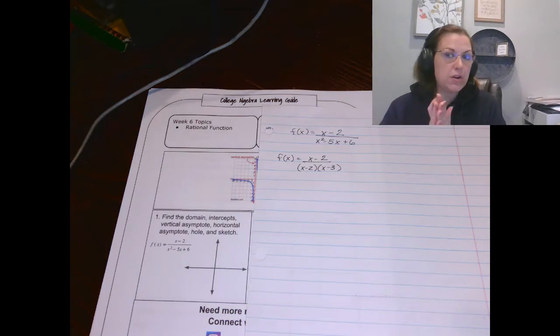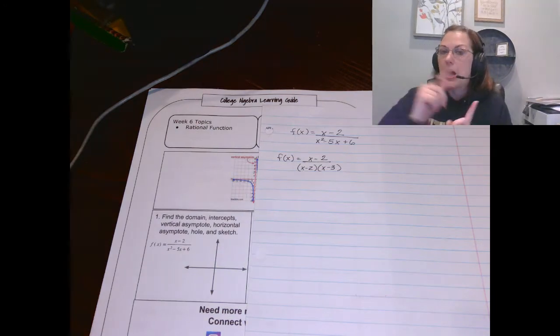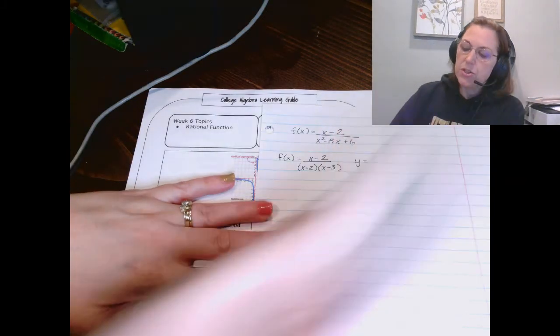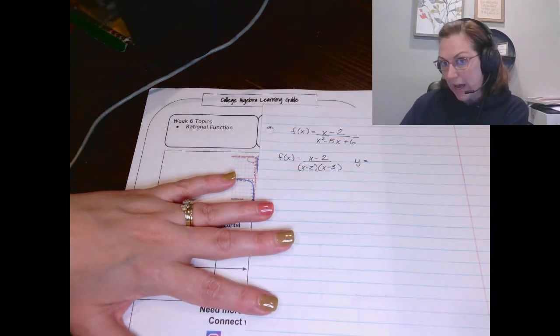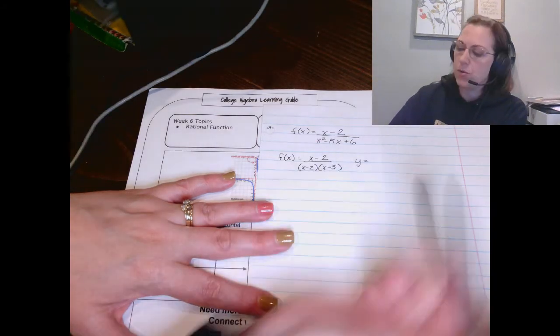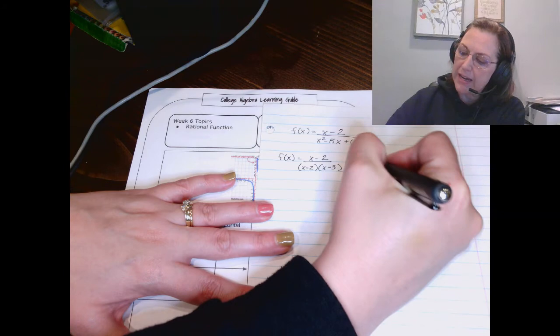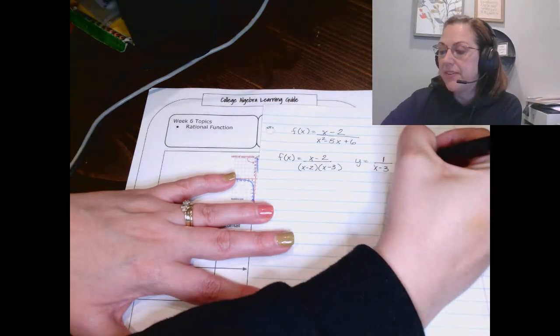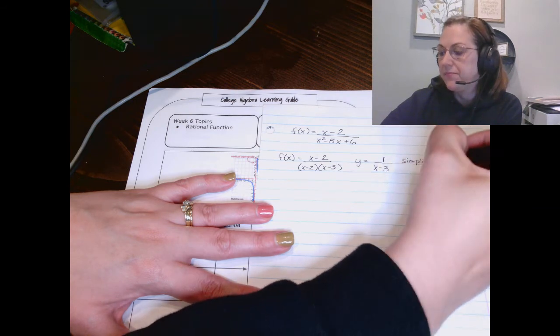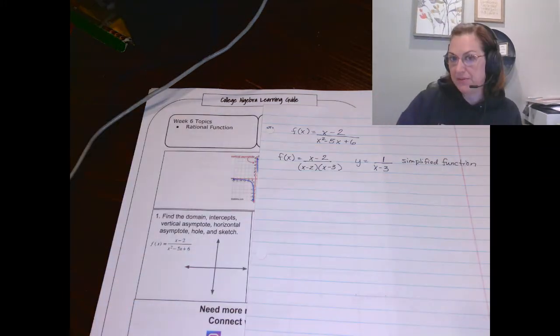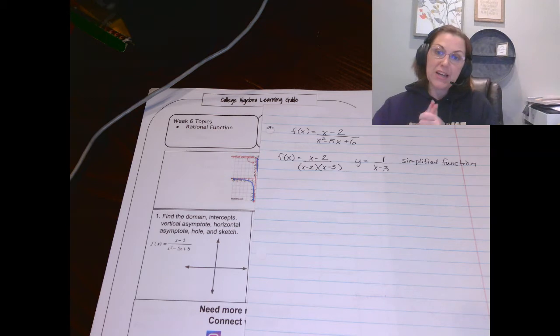So I'm going to factor that as x minus 2, x minus 3. I don't want you to mark them out yet. Instead, I want you to write a new function with them canceled out. So you'll notice I labeled this new function y instead of f of x because it's similar, but it's a little different than f of x. And notice these x minus 2s would cancel, but that would leave me a 1 on top and an x minus 3 on the bottom. Now, I call this the simplified function. f of x is the original function. y is the simplified function. So now we're going to look at finding all this list of details.